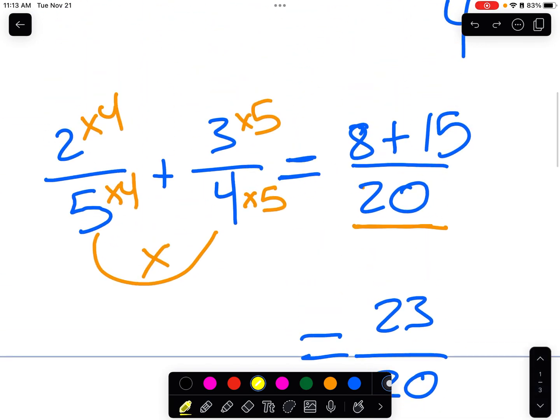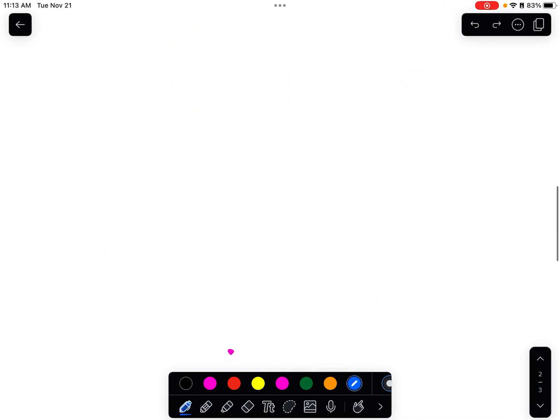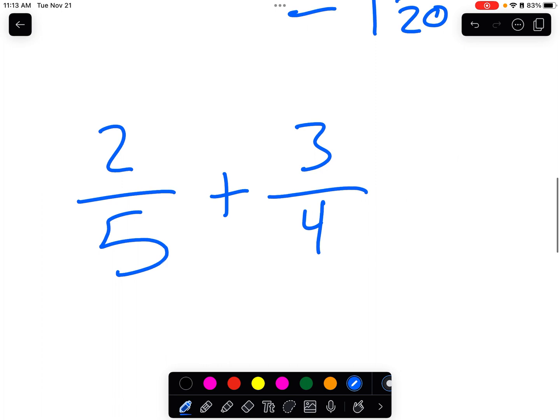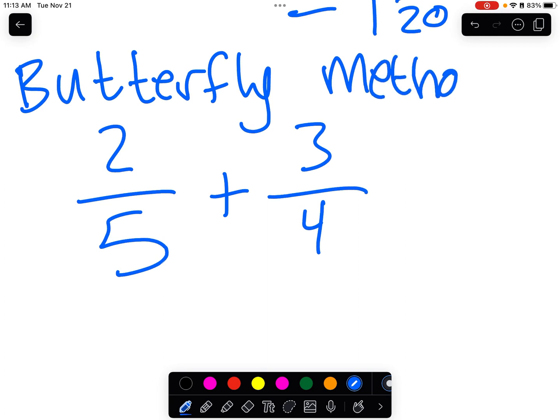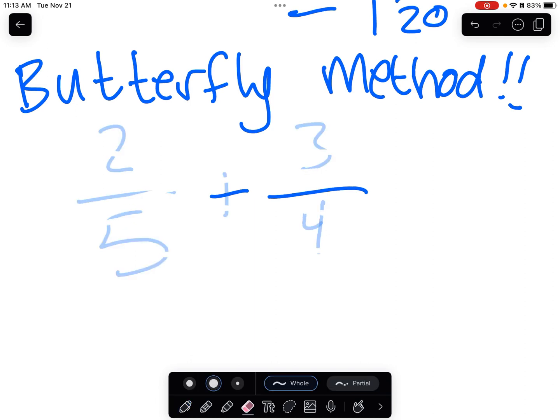But what do we do? So we have 2 5ths plus 3 4ths here. If we want to do this a little faster. Well, I'm going to show you something called the butterfly method, which honestly, I did not learn in elementary school. I learned it much later.